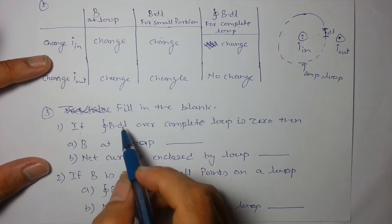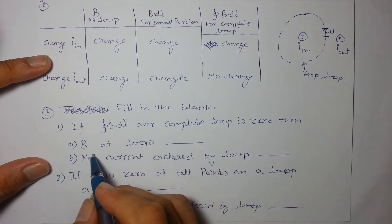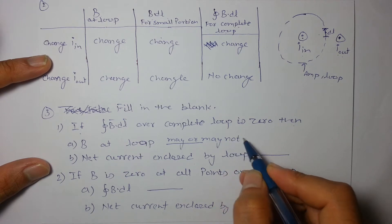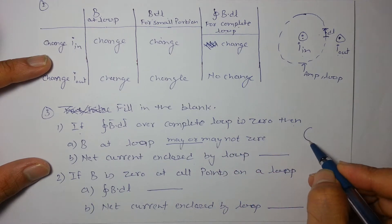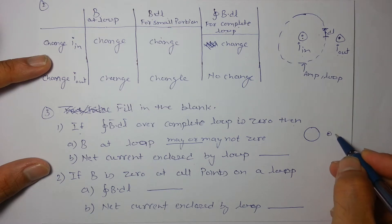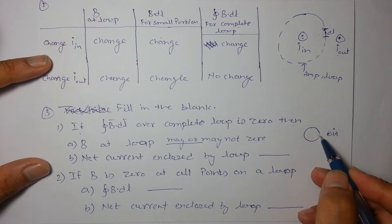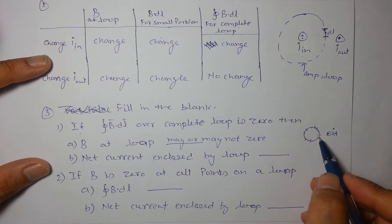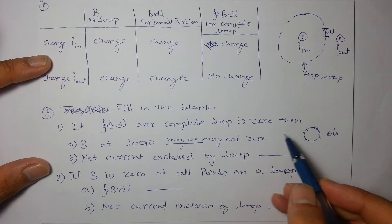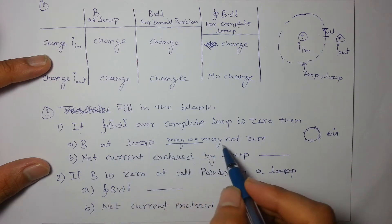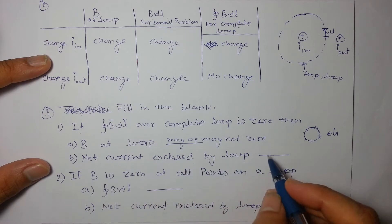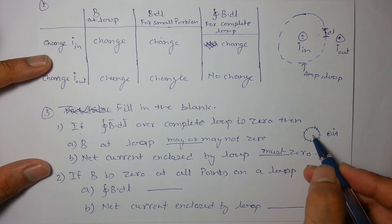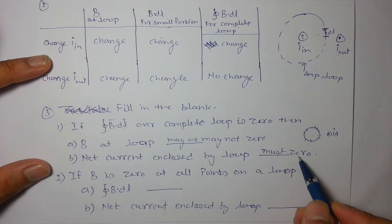Fill in the blanks: If B dot dl over the complete loop is zero, then B at the loop may or may not be zero. For example, consider a loop with no current inside but a current outside — there will be a magnetic field on the loop, but B dot dl over the complete loop will be zero. Net current enclosed by the loop must be zero, because B dot dl equals mu-naught times I enclosed.